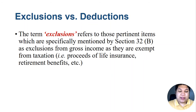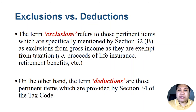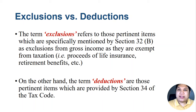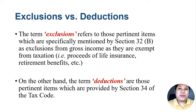On the other hand, 'deductions' are those pertinent items provided by Section 34 of the tax code — specific items which can be deducted from our gross income. Exclusions are items not subject to tax and are never added to gross income. Deductions, however, are items allowed by the law to be deducted from gross income; they could be itemized or optional standard deductions.